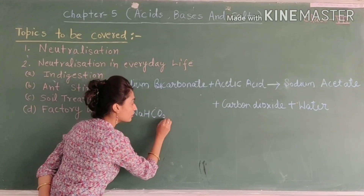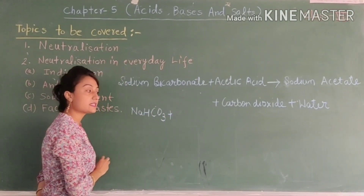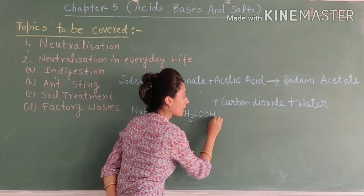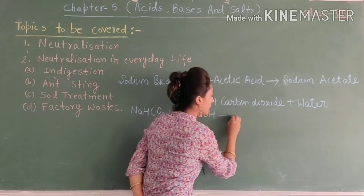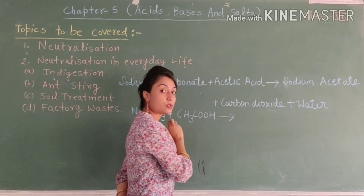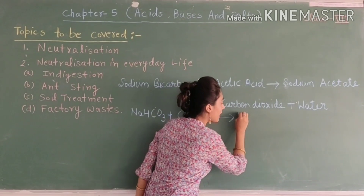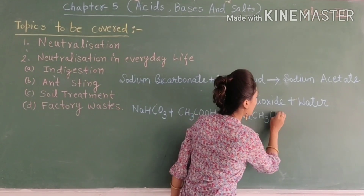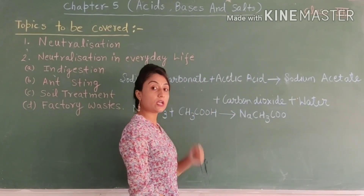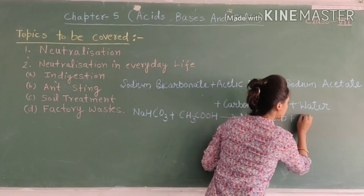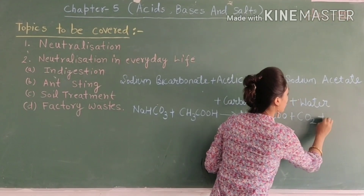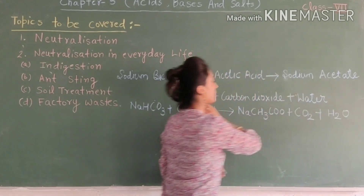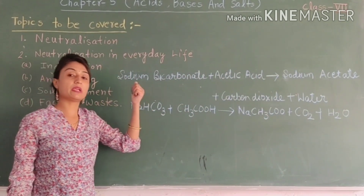The chemical reaction is: sodium bicarbonate (NaHCO3) plus acetic acid (CH3COOH) gives sodium acetate (NaCH3COO) plus carbon dioxide (CO2) plus water (H2O). This is our chemical reaction and this is the word equation.